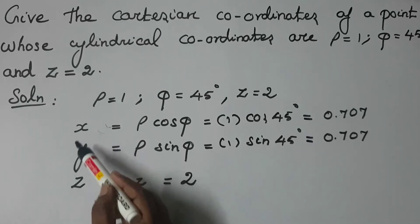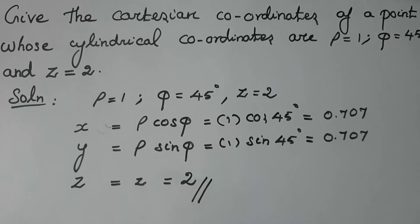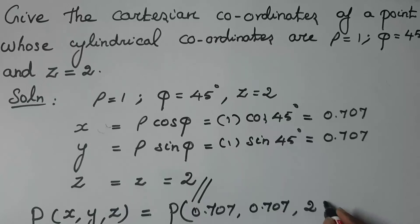So that is the result: X, Y, and Z. Then write this Cartesian coordinate point. So what is the format? The point of X, Y, and Z is equal to the point of, what is the X value? 0.707. Then what is the Y value? 0.707. Then what is the Z value? 2.